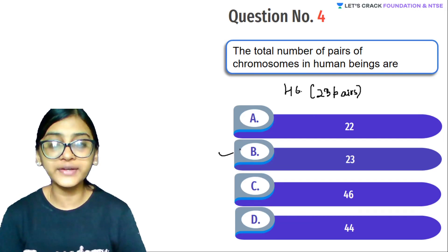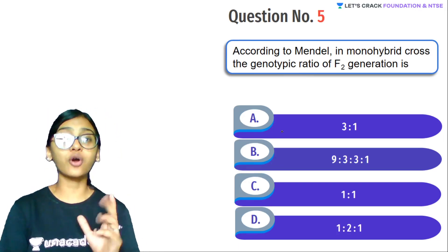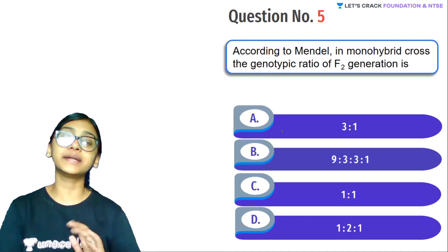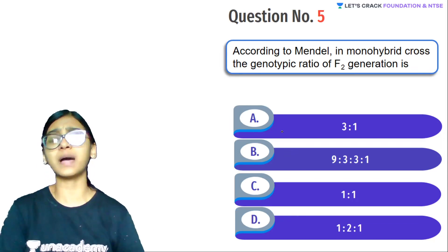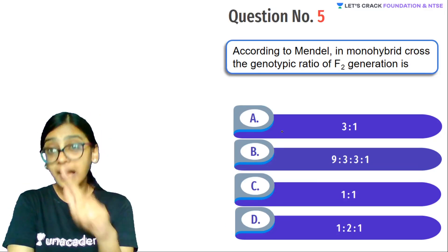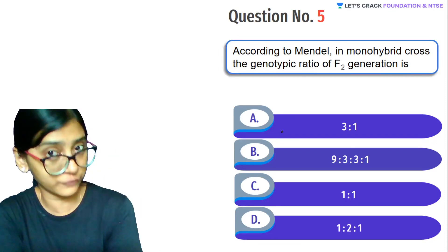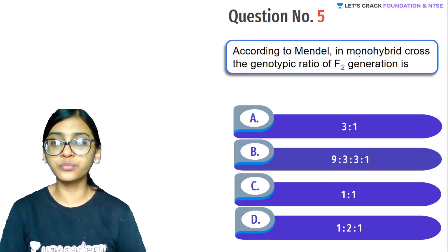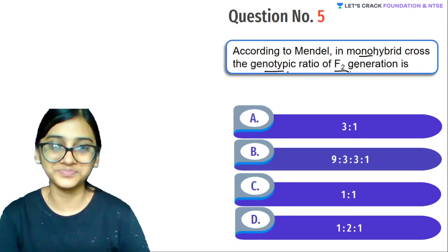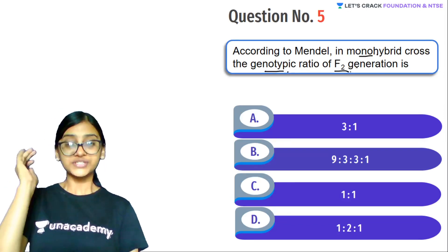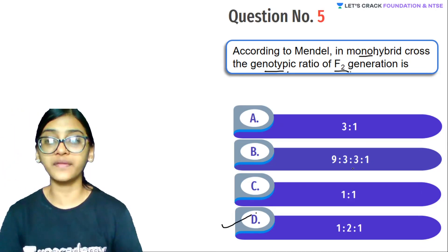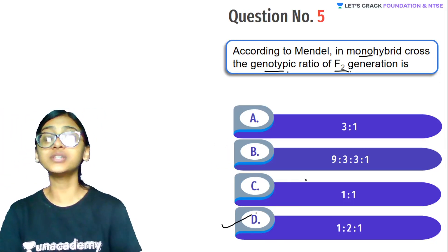Next question: According to Mendel, the genotypic ratio of F2 generation in a monohybrid cross. I just told you — it is monohybrid, it is genotypic ratio, and it is F2 generation. Answer quickly in the comment section. Yes, you all know — genotypic ratio is 1:2:1, phenotypic ratio is 3:1. And 9:3:3:1 is the dihybrid cross F2 generation phenotypic ratio.